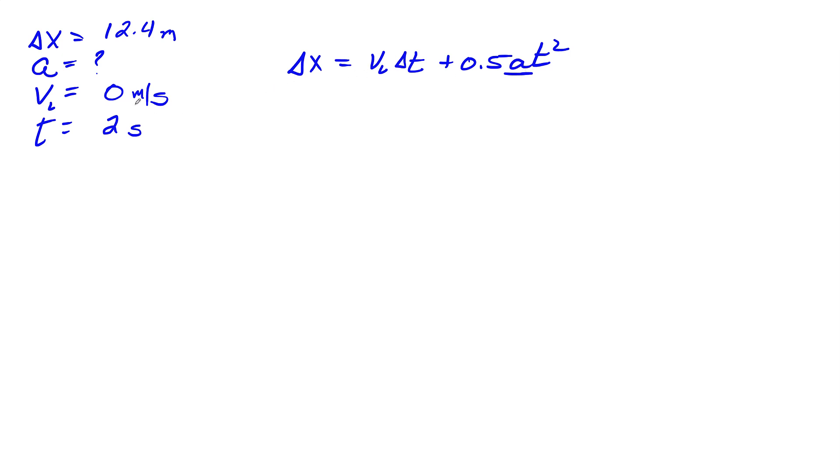Now, this term, vi is zero. So these two go away. So if I rewrite that, delta x, we don't need to worry about this term since it's zero. 0.5 at squared.